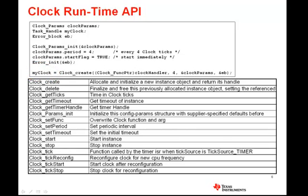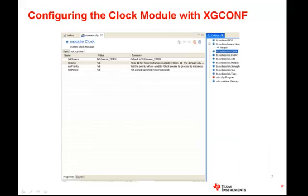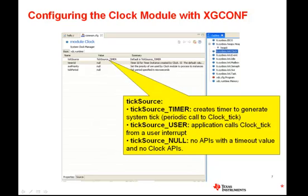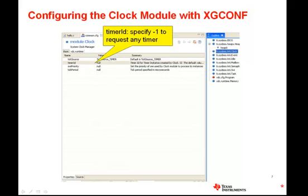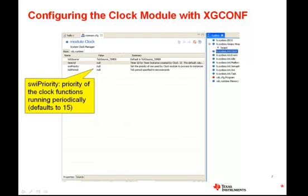Also on this slide is a summary of the other API calls used to control a clock instance. To configure the clock module statically, you can use the SysBIOS configuration tool xgconf and select the clock module. Here you can see that the tick source is selectable and can be configured to use the timer input or an external system input to act as the clock heartbeat. You can also select a source of null, but that's an optimization that will prevent any clock function from firing and will prevent any SysBIOS API calls from having a timeout — for example, a semaphore pend call cannot have a timeout value in that case. The timer ID is used to specify which of the chip's physical timers are actually utilized; a value of minus one will allow the config tool to select the default timer. The clock module is implemented as a software interrupt posted by the underlying timer module, so the priority of that software interrupt is settable.